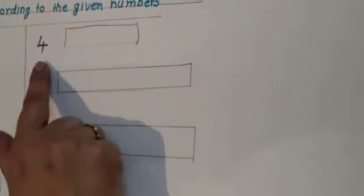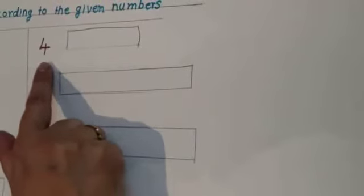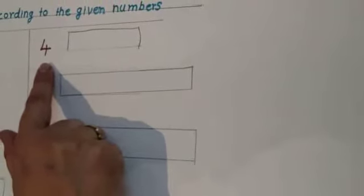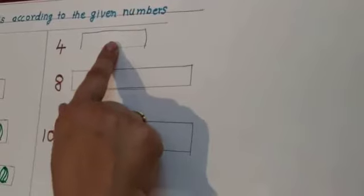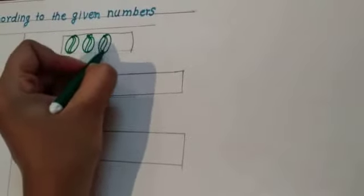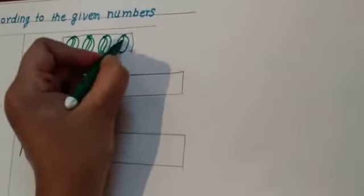So kids, look here. Which number is this? 4. So kids, first you have to look at this number and then you have to draw the balls. How many balls do we have to draw here? 4 balls. Very good. 1, 2, 3, 4.